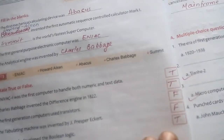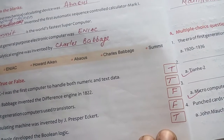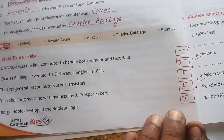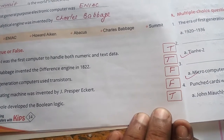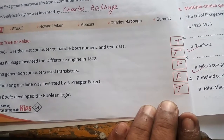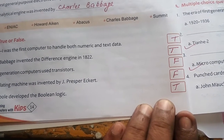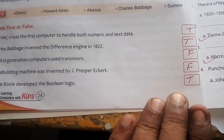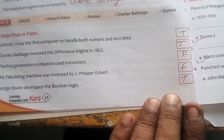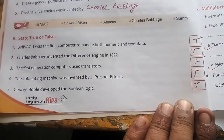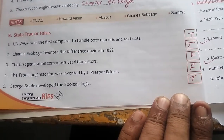Now, true-false. The UNIVAC was the first computer to handle both numeric and text data — true. Charles Babbage invented the differential engine in 1822 — true. First-generation computers used transistors — false. The tabulating machine was invented by J. Presper Eckert — false. And George Boole developed Boolean logic — true.